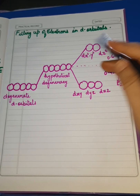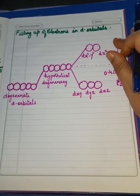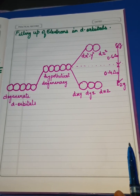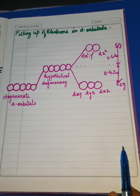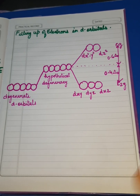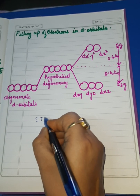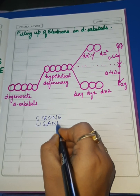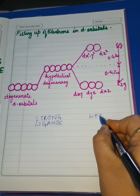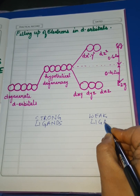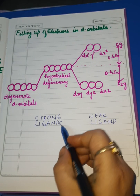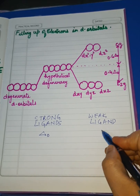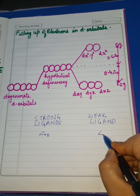This splitting depends upon the nature of the ligand. There are two kinds of ligands — I have already explained about those ligands in my video related to valence bond theory (VBT). Ligands are of two types: certain ligands are strong ligands and certain ligands are weak ligands. Strong ligands bring about maximum splitting, while weak ligands bring about a small splitting.